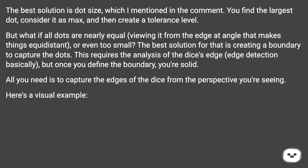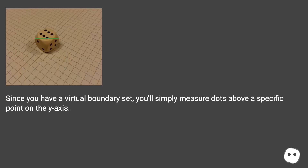All you need is to capture the edges of the dice from the perspective you're seeing. Here's a visual example. Since you have a virtual boundary set, you'll simply measure dots above a specific point on the y-axis.